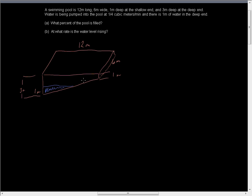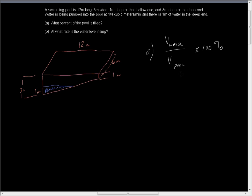The question is: what percent of the pool is filled? We need to compare volumes. Part A asks for the volume of water divided by the volume of the pool, then multiplied by 100%. So we need to find the volume of the water, divide it by the volume of the pool, and multiply by 100%.